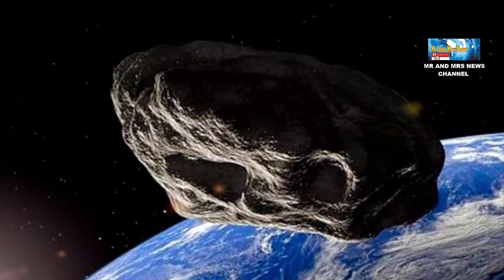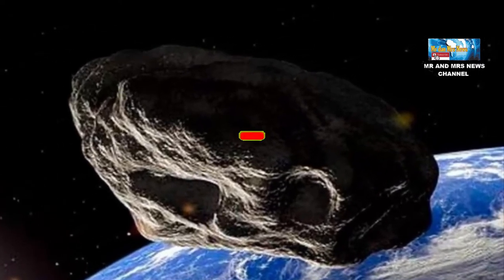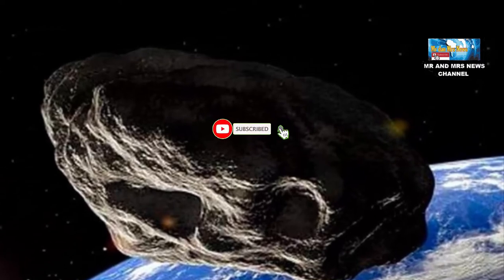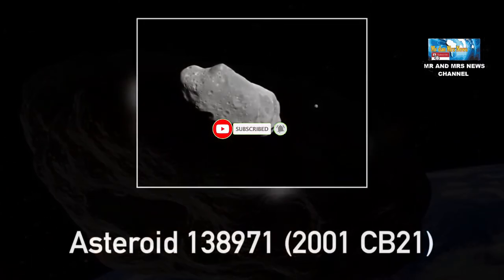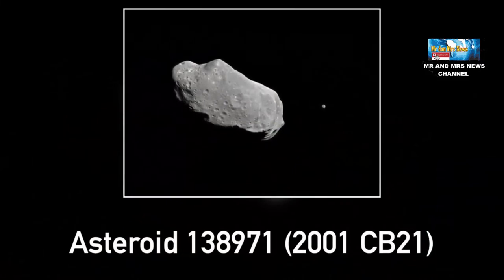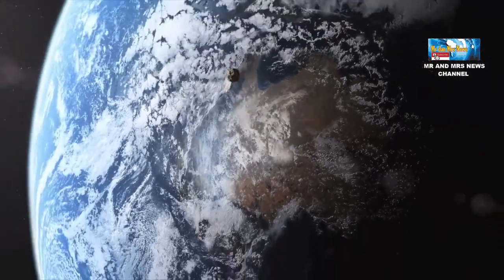The passing of this giant asteroid will not affect any conditions on Earth. Celestial objects near Earth, including asteroid 2001CB21, remain under continuous observation by world astronomy agencies.